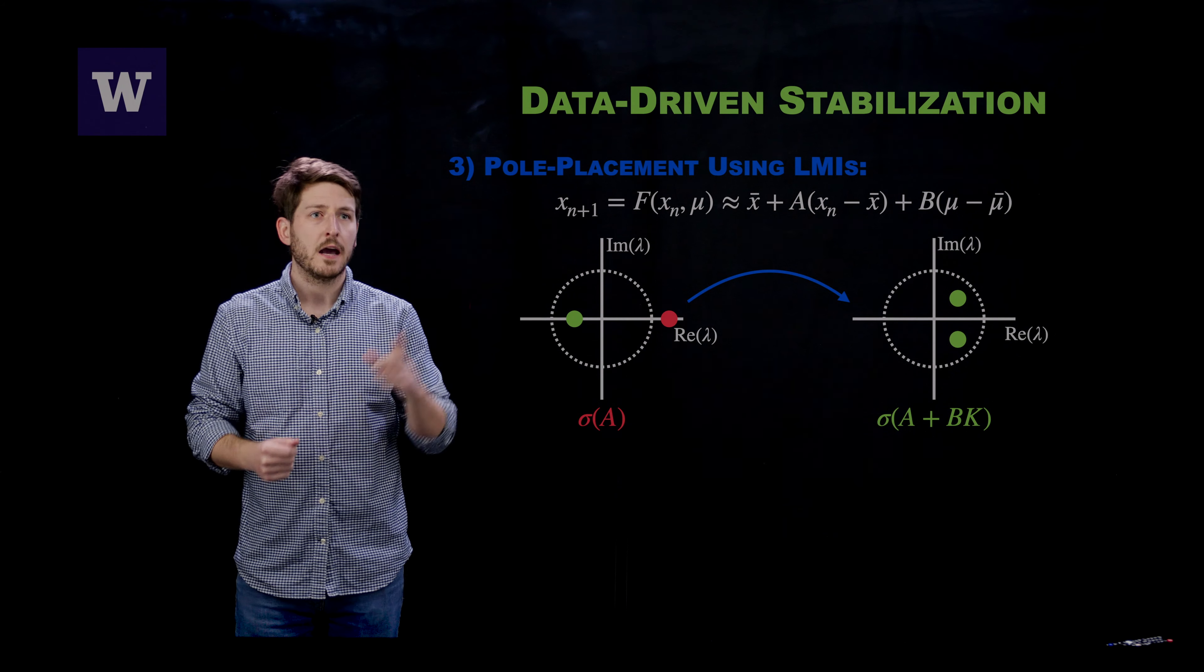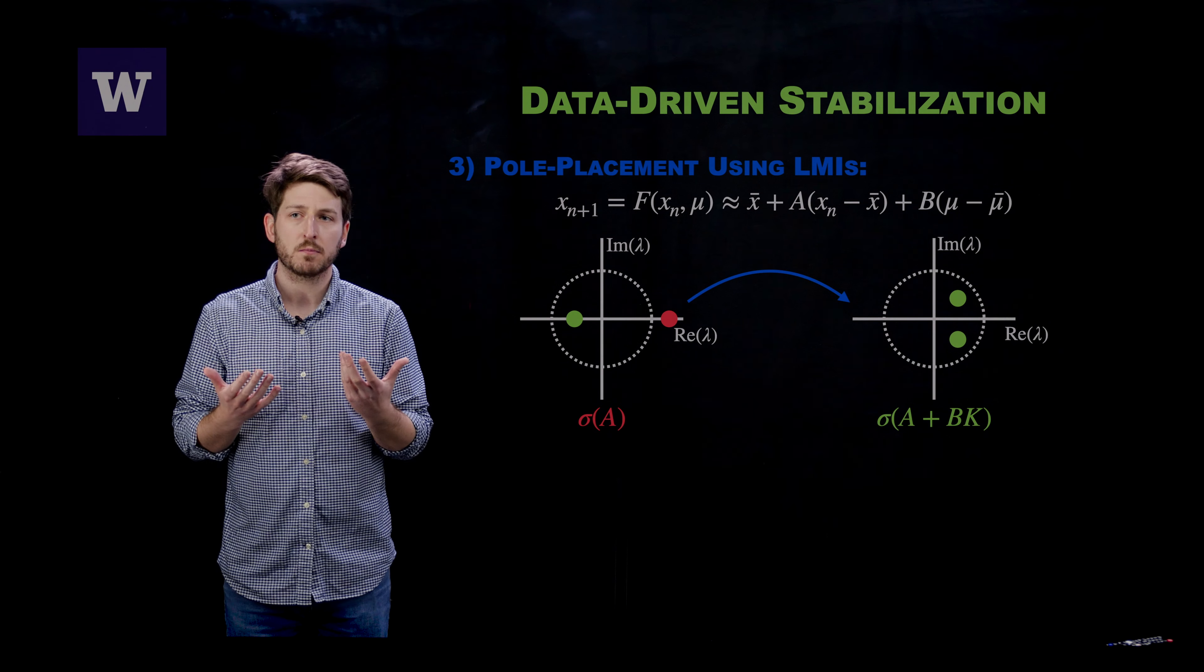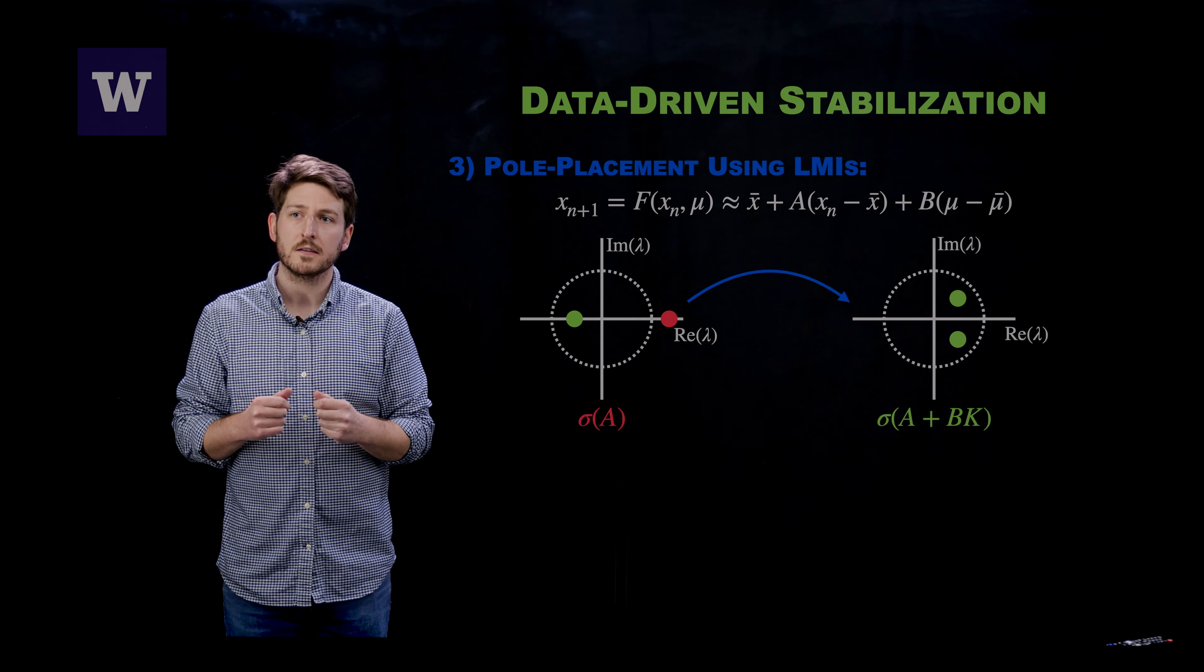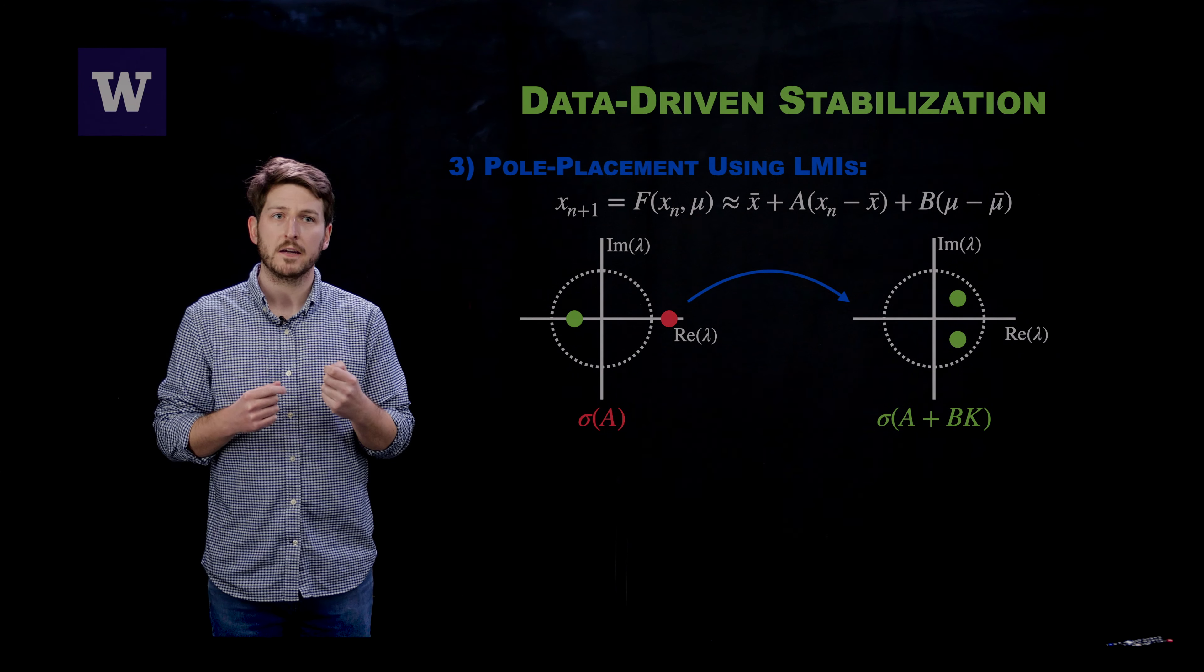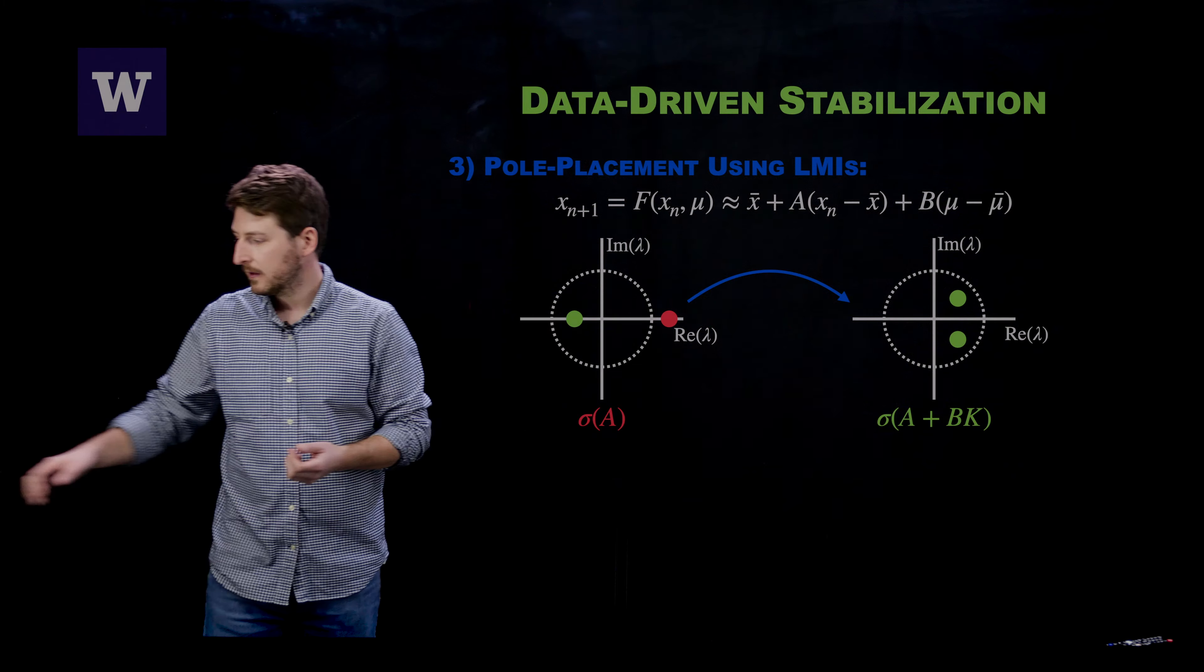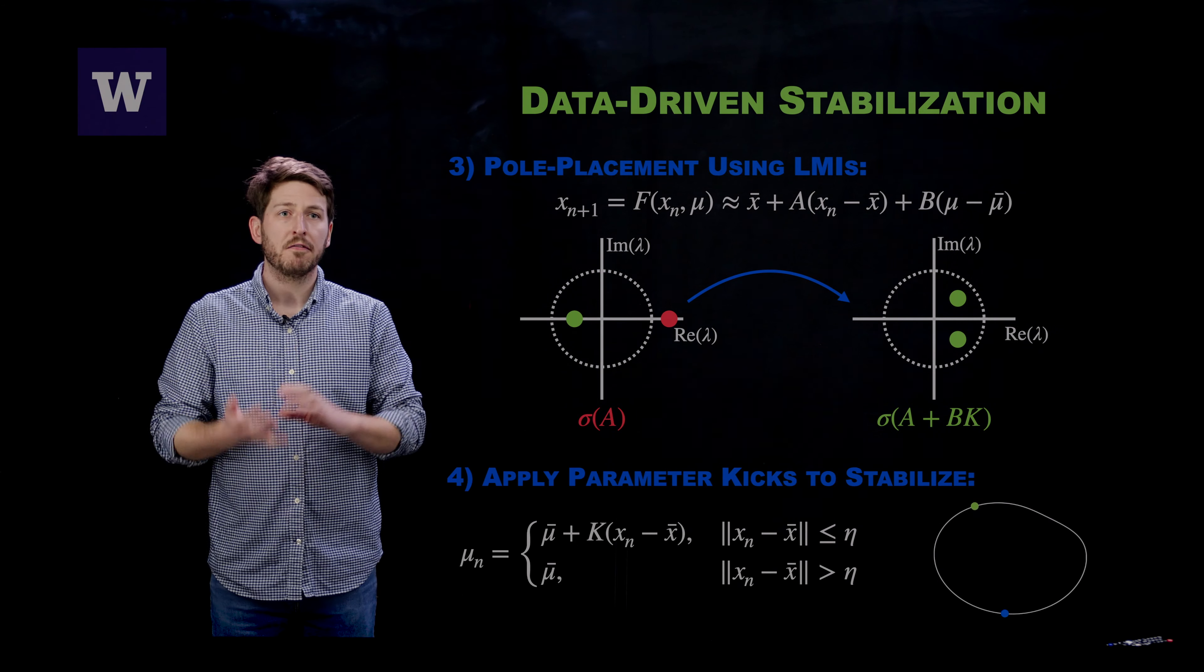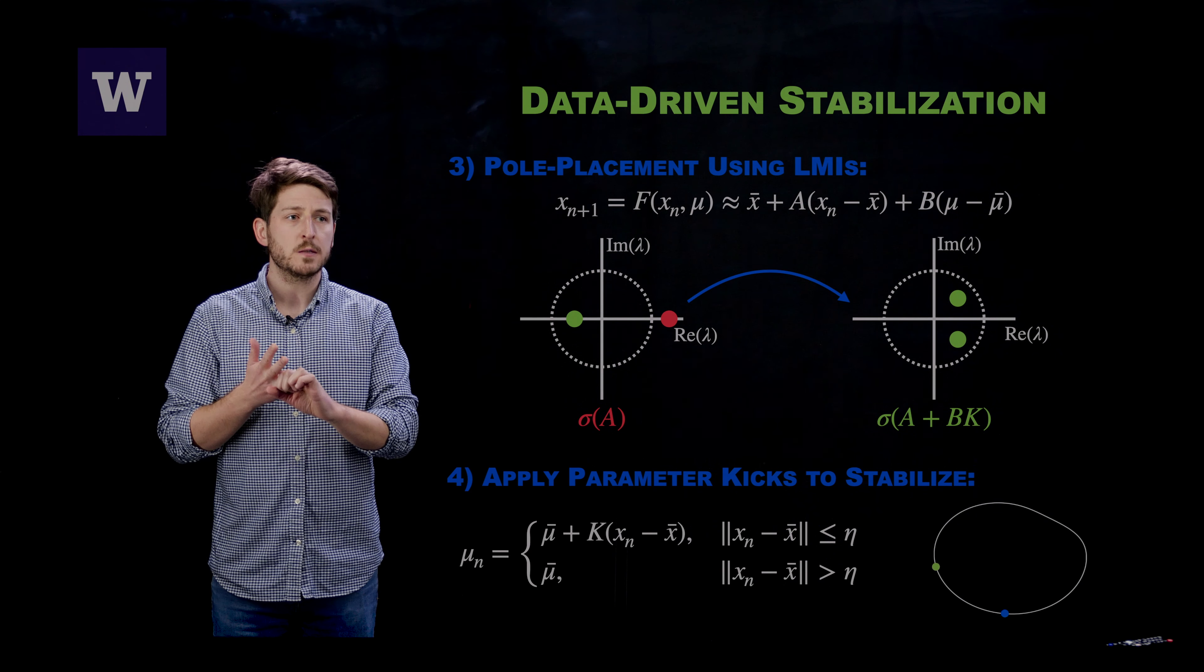Now our contribution to this method is that we show that you can automatize this problem by forming a system of linear matrix inequalities that can be used to find the precise parameter manipulation matrices K. And the result of all of this work is that you have identified periodic orbits that you can stabilize and the precise parameter manipulations that lead to these perfectly stabilized periodic orbits.